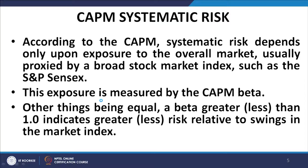In the CAPM and the APT, these common forces are called systematic or pervasive risks. According to the CAPM model, systematic risk depends only upon exposure to the overall market, usually proxied by a broad stock market index such as the S&P. This exposure is measured by the CAPM beta.